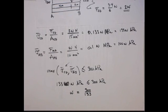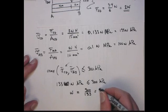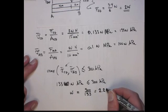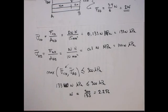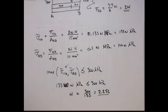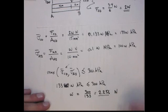So that means the maximum value of W is going to be W equal to 300 over 133, and so that gives me 2.256. So that's the value of W, and that's going to be newtons.